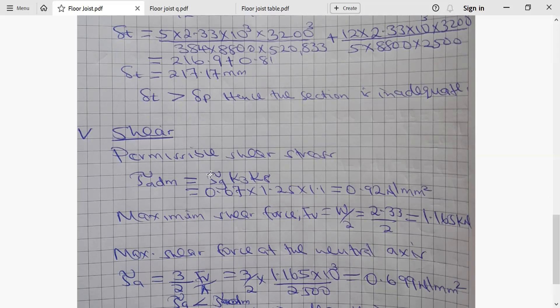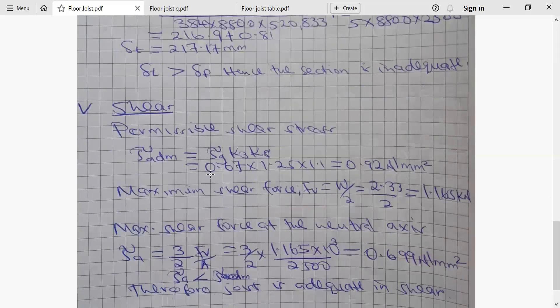We say permissible shear stress, shear stress that can be allowed before the section fails, is given by the shear stress we read from the table multiplied by K3 and K8, which will give us 0.92 newton per millimeter squared. Maximum shear force Fv is given by the W, the load we had, divided by 2, which is 2.33 over 2, giving us 1.165 kilonewton.